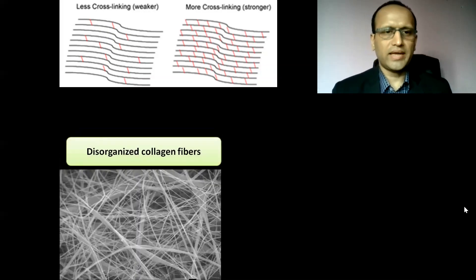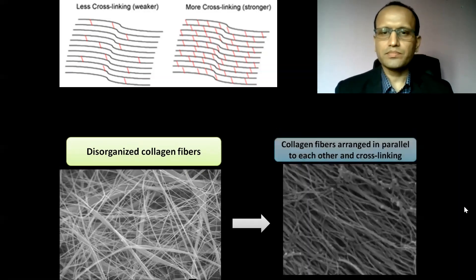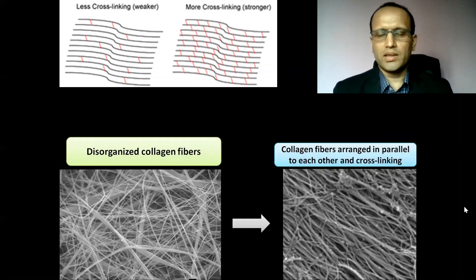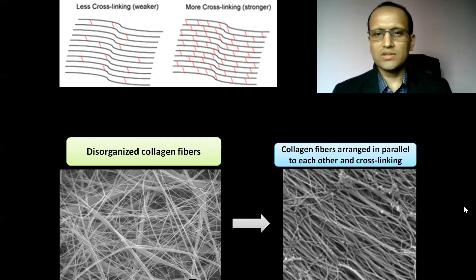This is an electron microscopic photograph. This photograph shows disorganized collagen fibers. On the right side, there is another electron microscopic photograph. This photograph shows parallel arrangement of collagen fibers and cross-linking between the collagen fibers.